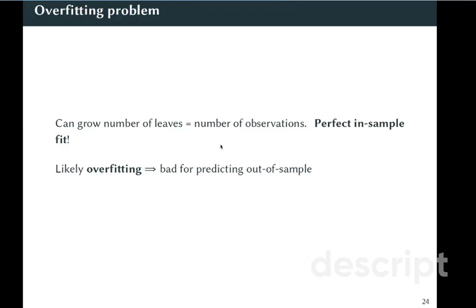We can happen to grow a tree so large that it has as many leaves as the number of observations, and we get our perfect in-sample fit. So our sum of squared residuals is exactly zero. But we are likely overfitting, and it is bad for predicting out of sample.